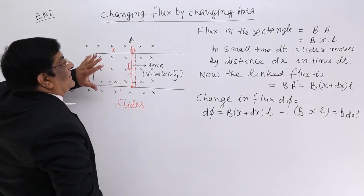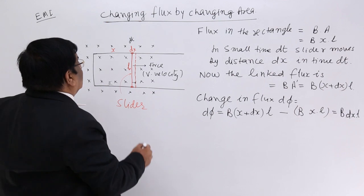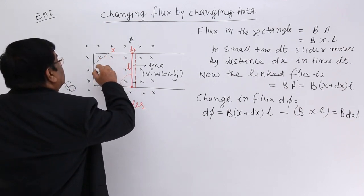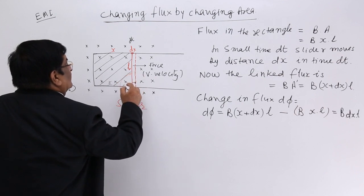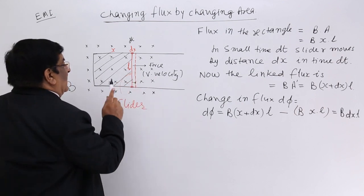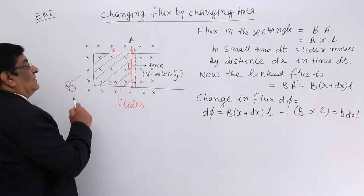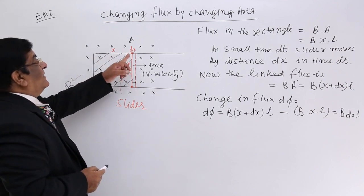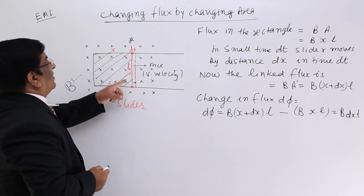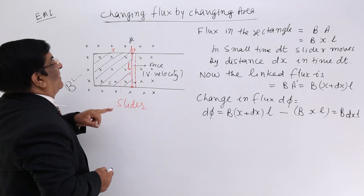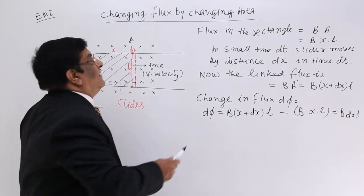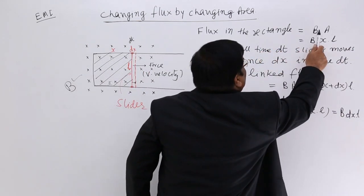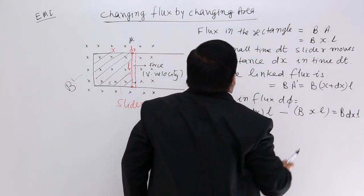Now, what is happening here? Initially what was the flux linked to this area? The answer is magnetic field strength B multiplied by area. Area is width into length x multiplied by L, so the flux is B into xL. Flux in the rectangle is B into area BxL.